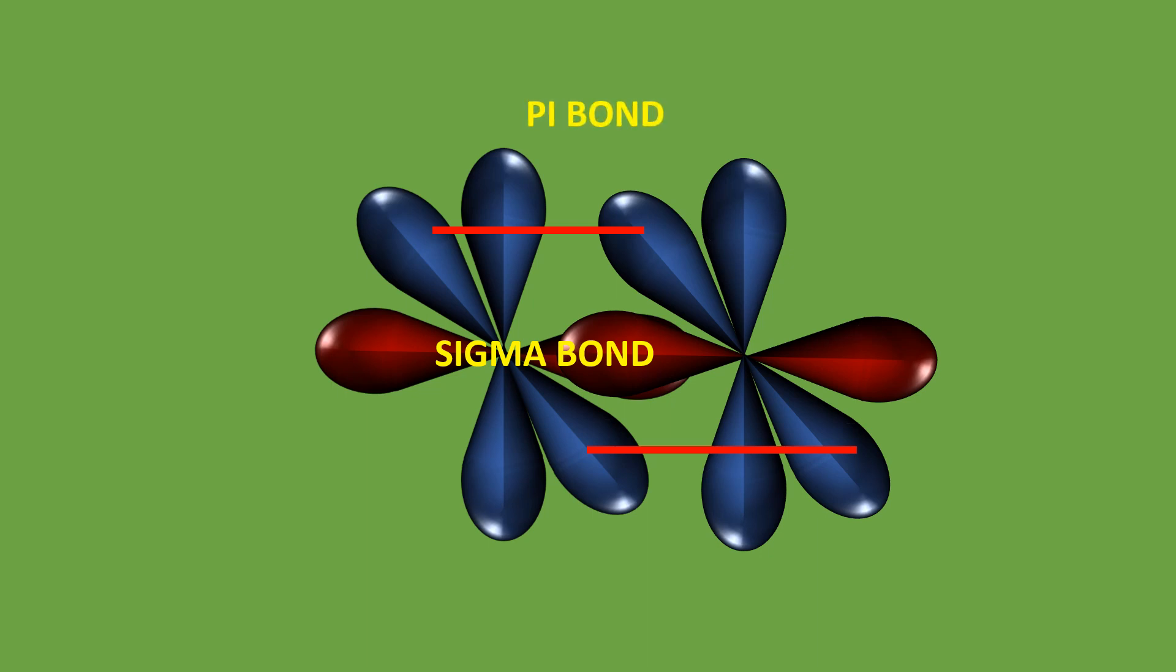As same as the Pz orbital of one nitrogen atom overlap the Pz orbital of another nitrogen atom laterally perpendicular to internucleus axis giving another pi bond.